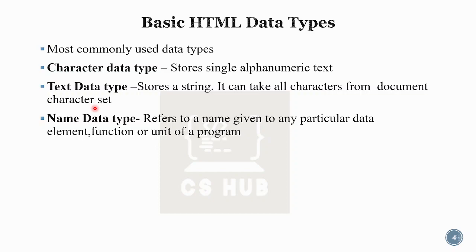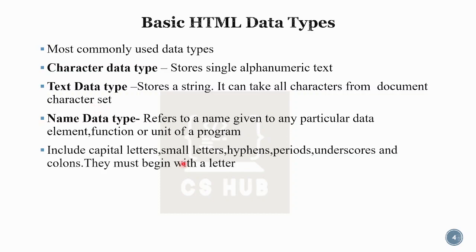The name data type includes capital letters, small letters, hyphens, periods, underscores, and colons. They must begin with a letter. Numbers are not allowed at the start. Letters — capital and small — plus extra symbols like hyphen, colon, underscore, and full stop periods are permitted. This is the name data type.